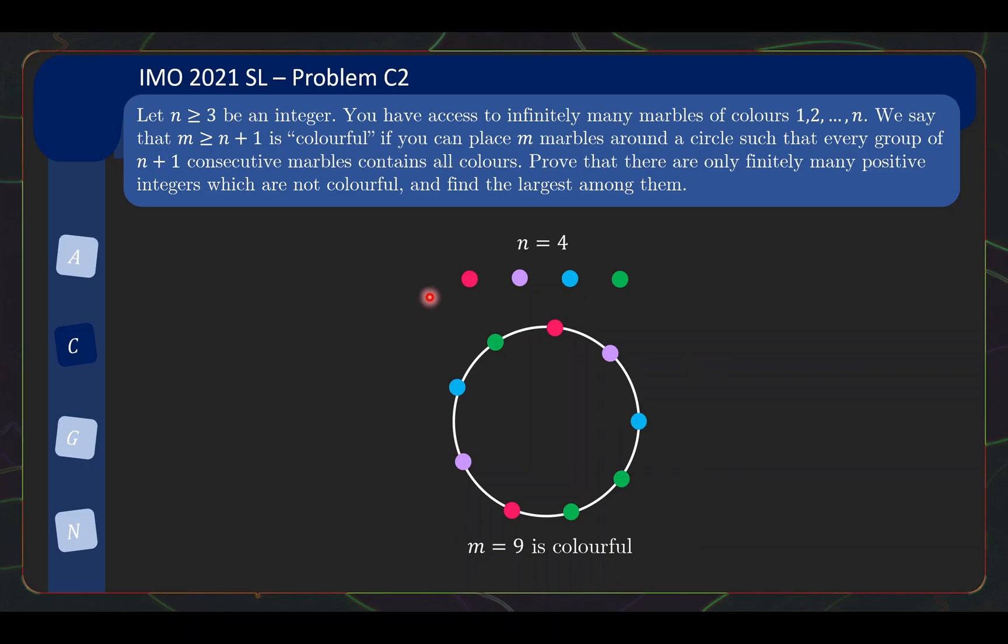Okay, so how would you go about approaching this problem? Well, one possible idea that you might explore is, can I come up with a construction that will make m a colorful number? So you have m marbles. Is there some easy way I can just produce a construction, place that around a circle so that this condition here is fulfilled? So let's start exploring possible constructions.